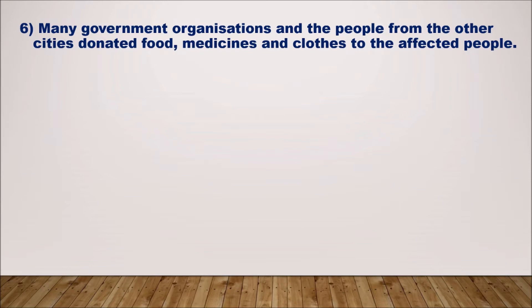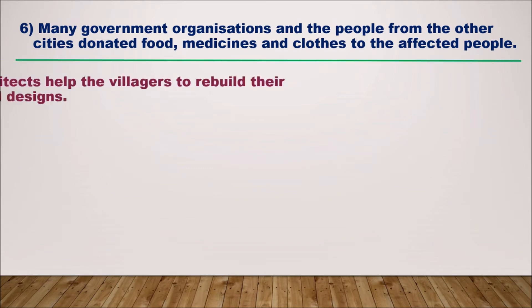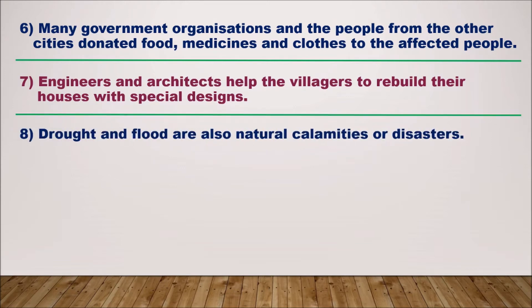People were seriously injured and many lost their lives. Government organizations and people from other cities donated food, medicines, and clothes to the affected people. Engineers and architects helped the villagers to rebuild their houses with special designs. Drought and flood are also natural calamities or disasters.